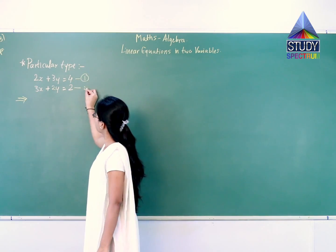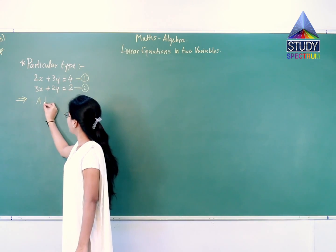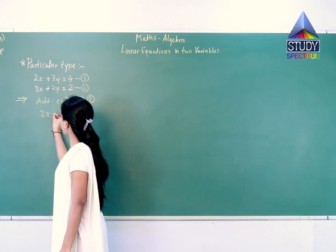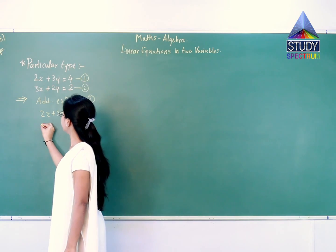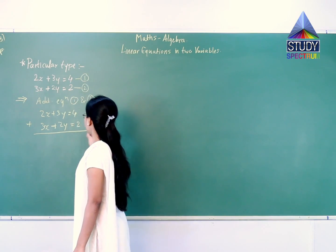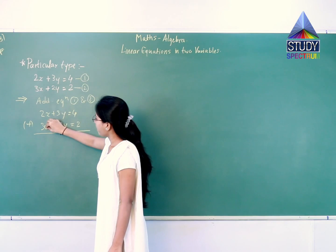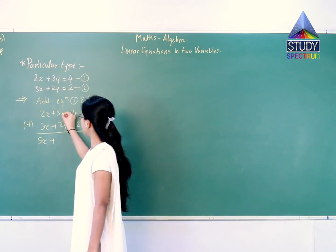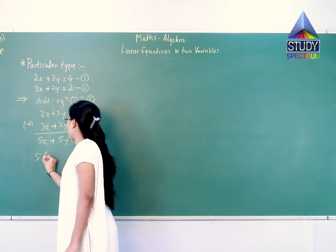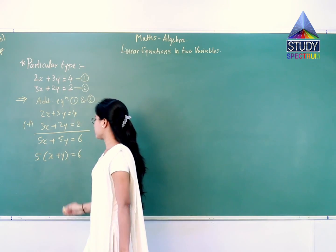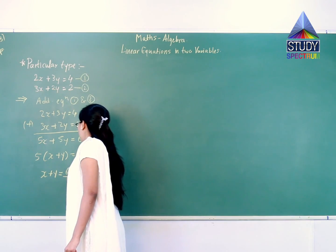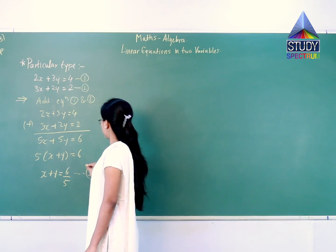To solve this kind of equation, we perform 3 steps: name them equations 1 and 2, then add them, then subtract them. Adding equation 1 and 2: 2x plus 3y equals 4, plus 3x plus 2y equals 2. So 2 plus 3 gives 5x, and 3 plus 2 gives 5y, equals 4 plus 2 equals 6. Taking 5 common: 5(x plus y) equals 6, so x plus y equals 6 upon 5. This is equation 3.